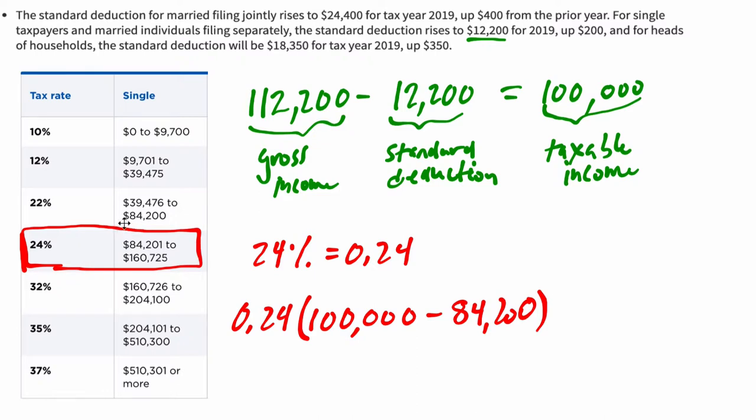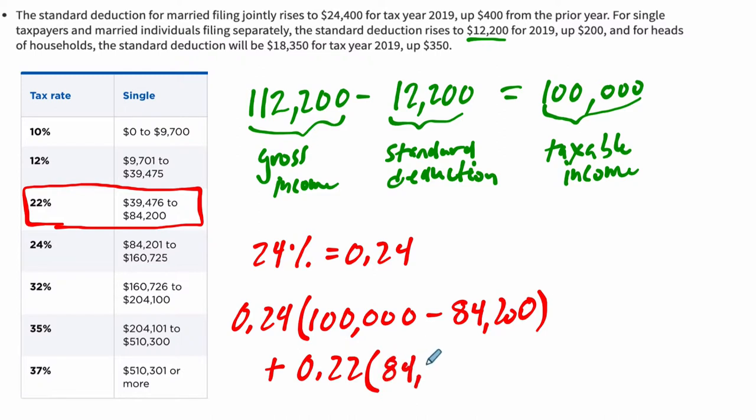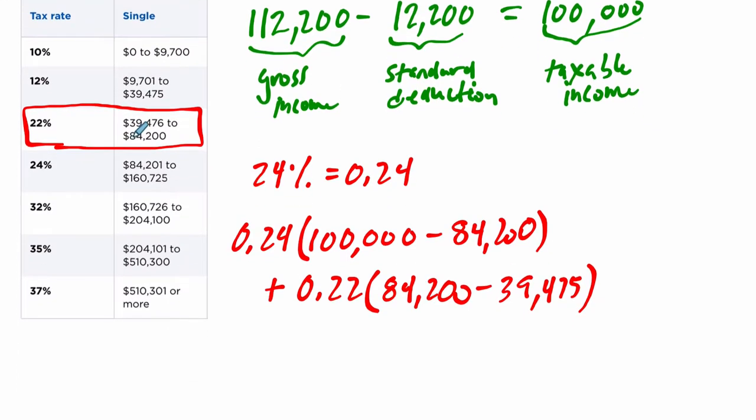Then as we move down to our next bracket right here, the next thing we're looking at, what we're trying to calculate right here is how much in total we're paying in taxes. We're paying 22% of all the money we have that fits in this range right here, which is from $84,200 all the way down to $39,475. In other words, all the money we have above $39,475, but less than $84,200.